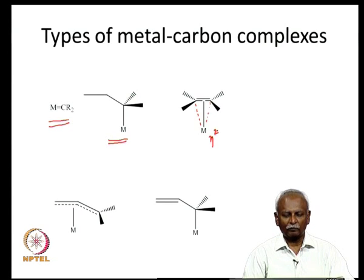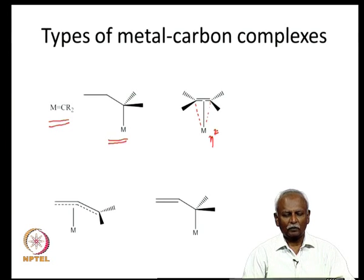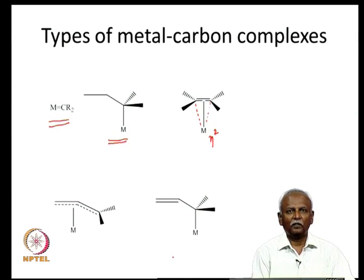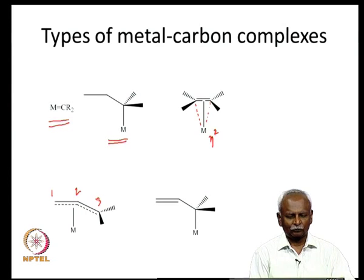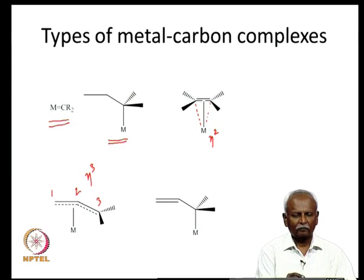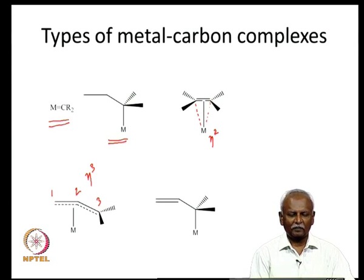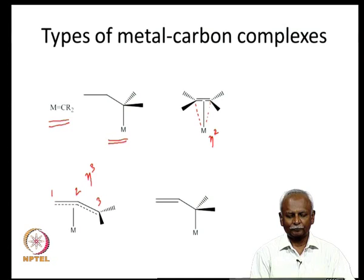Today we are going to talk about metal allyl complexes, which are interesting because they have 2 forms predominantly found in the literature. One in which the 3 carbon atoms of the allyl moiety are interacting with the metal almost equidistantly — the hapticity is 3. We indicate it with the eta 3 notation, eta with superscript 3, to indicate that 3 carbon atoms are interacting with the metal simultaneously.